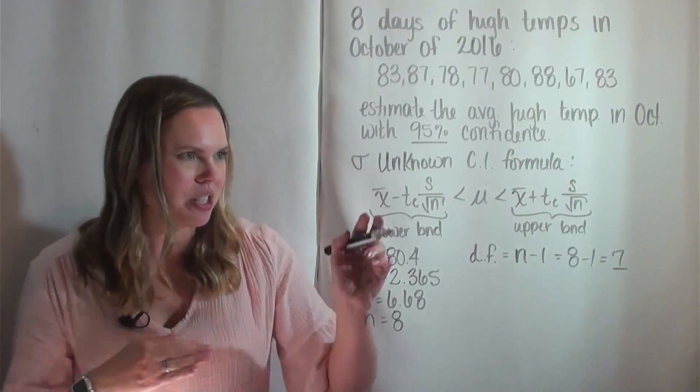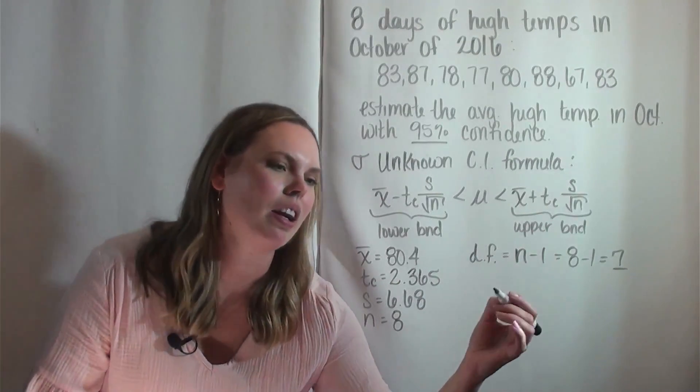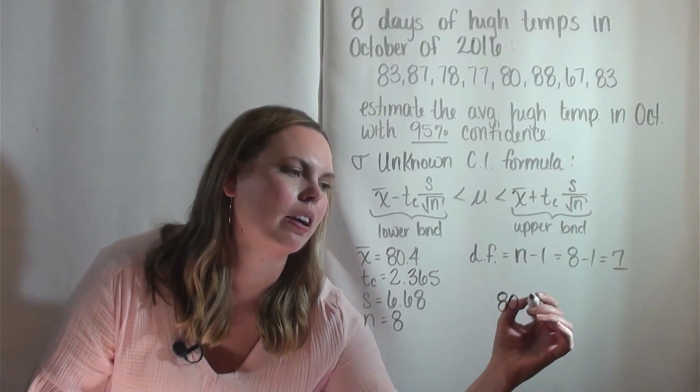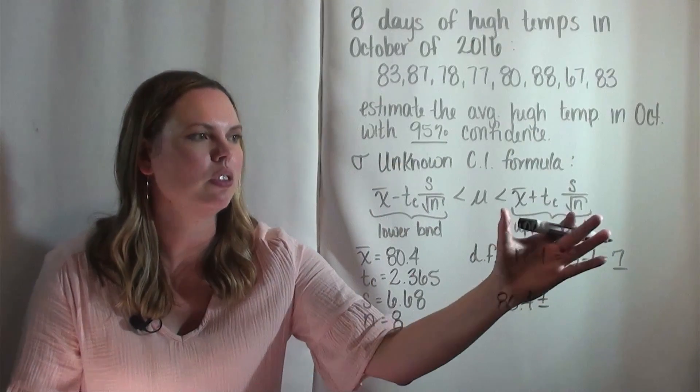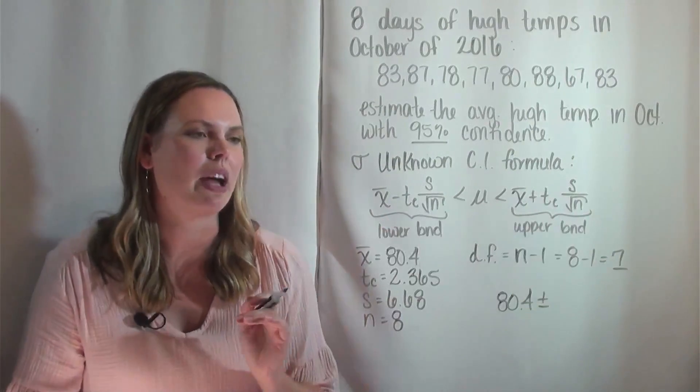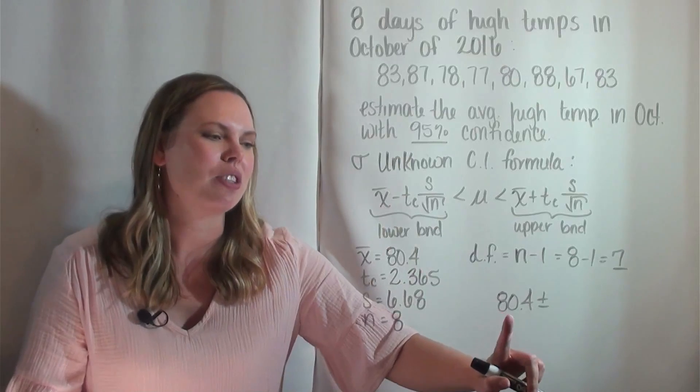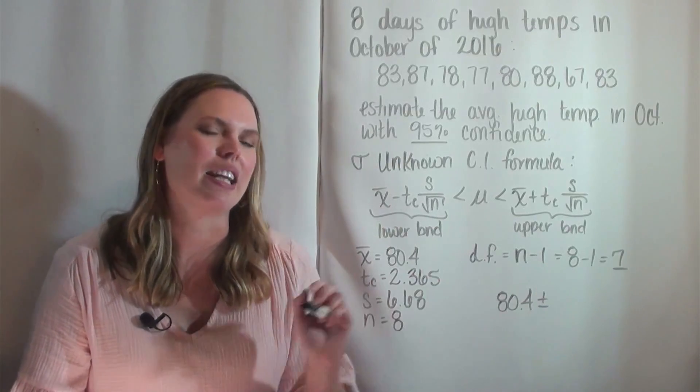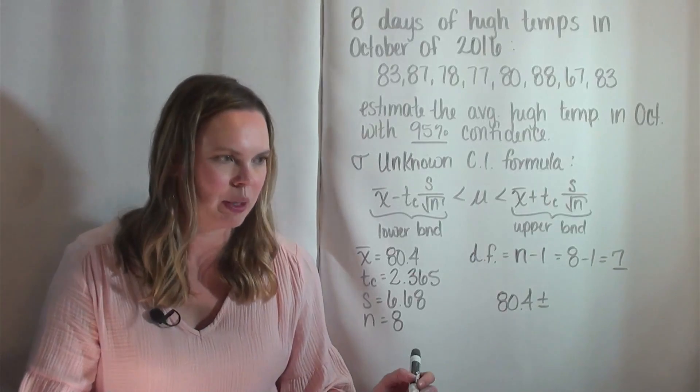All right, so we've got our pieces and we just need to plug into this formula. I'm going to write it here, X bar, and I'm going to use a plus or minus here because if you notice these two pieces, the lower bound and upper bound, the only difference is the minus sign and the plus sign. So I'm going to do everything with the minus sign and then everything with the plus sign to find the lower and upper boundary.